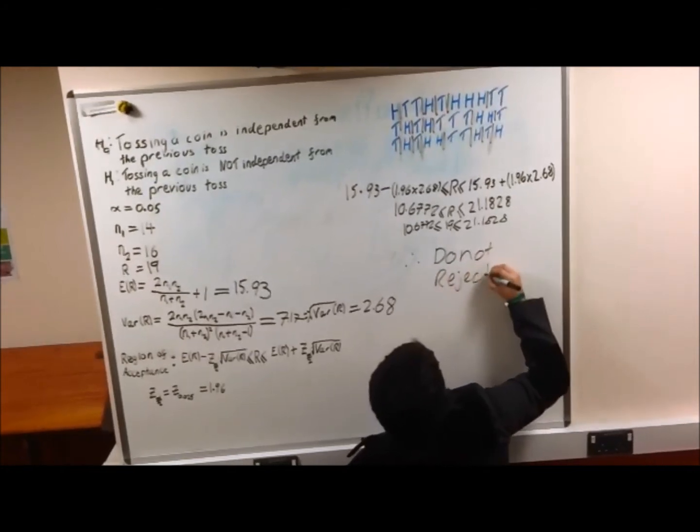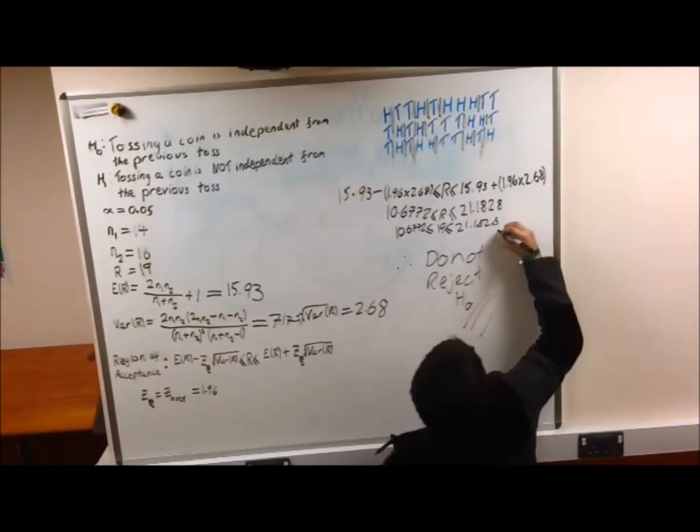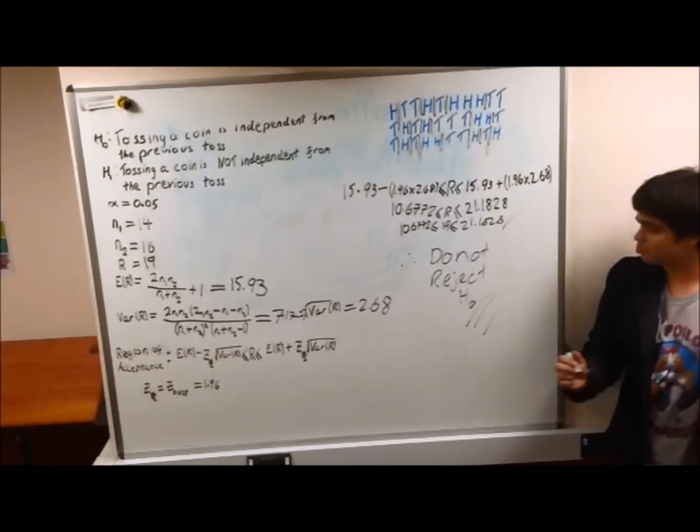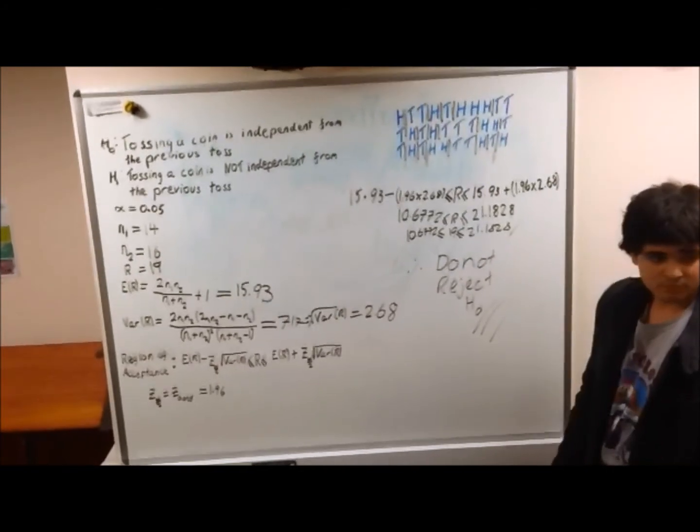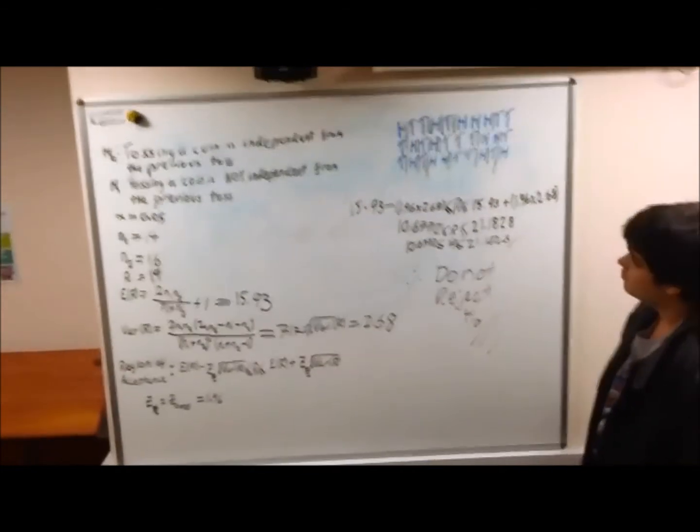Therefore, tossing a coin is independent from the previous toss. In non-mathematical terms, our coin was not biased and the result of the flip of the coin had nothing to do with the previous result and therefore random.